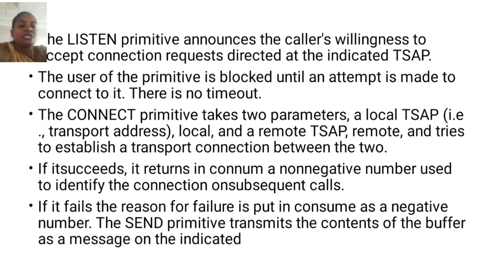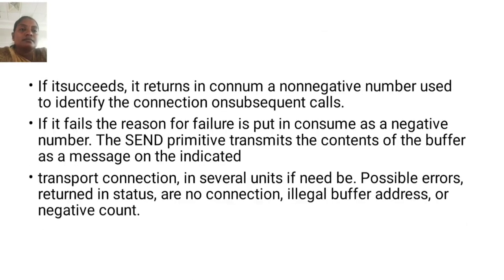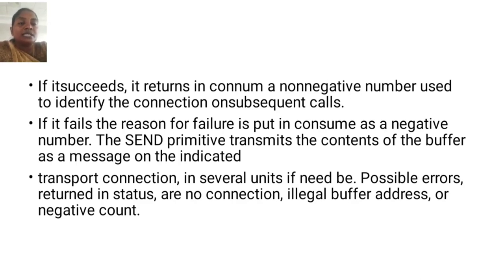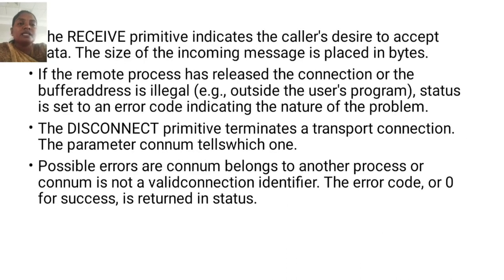The send primitive transmits the contents of the buffer as a message on the indicated transport connection, in several units if need be. The possible errors returned in status are: no connection, illegal buffer address, or negative count. The receive primitive indicates the caller's desire to accept data, and the size of the incoming message is placed in bytes.